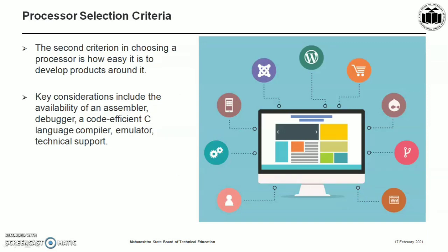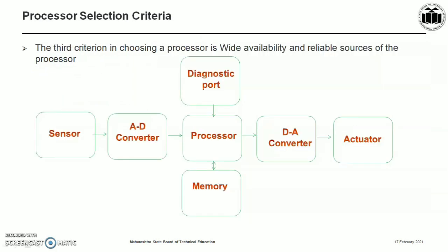The next criteria is availability of software development tools like assembler, debugger, and code-efficient C language compiler, along with hardware and technical support. The third criteria in choosing a processor is wide availability and reliable sources of processors, as well as supporting components like analog-to-digital and digital-to-analog converters, memory chips, diagnostic ports, serial/parallel ports, and some auxiliary systems.